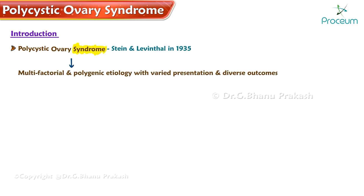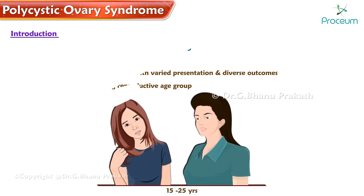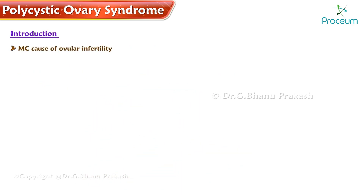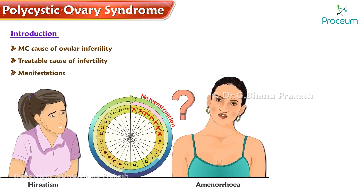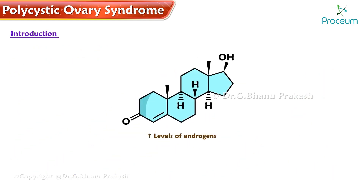Polycystic Ovary Syndrome is the most common endocrine disorder among the reproductive age group, mainly 15 to 25 years. It is the most common cause of anovulatory infertility and is a treatable cause of infertility. It is mainly manifested by hirsutism, amenorrhea, and obesity. The main pathology is increased levels of androgens.